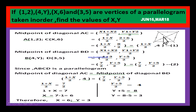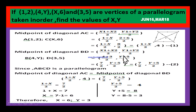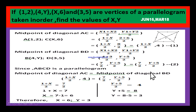Now let us find the midpoint of the second diagonal BD. B has coordinates (4, Y) and D has coordinates (3, 5). Using the midpoint formula: (4 + 3)/2 = 7/2, and (Y + 5)/2. Therefore the midpoint of the second diagonal BD is (7/2, (Y + 5)/2).